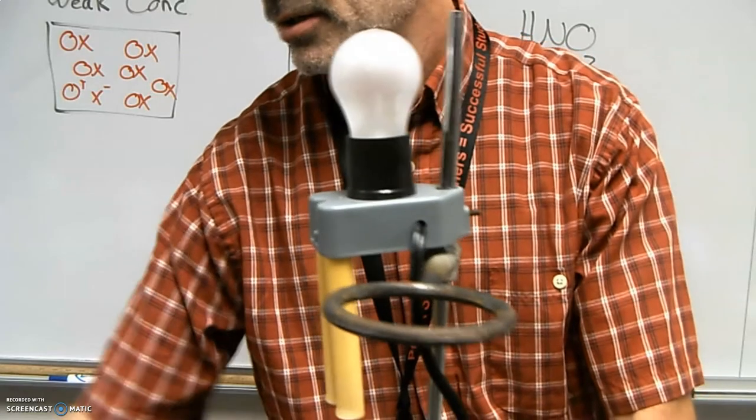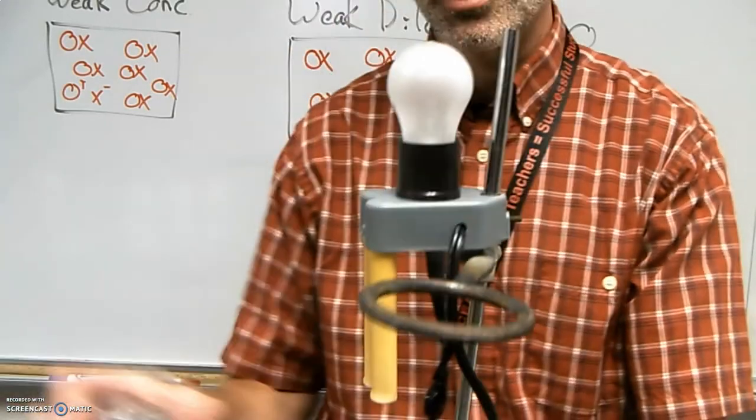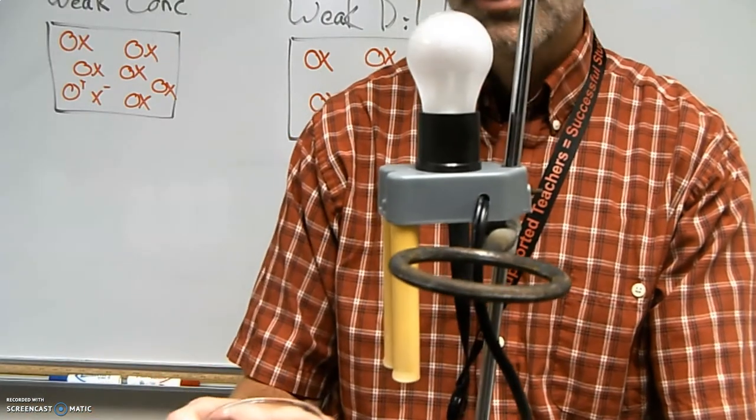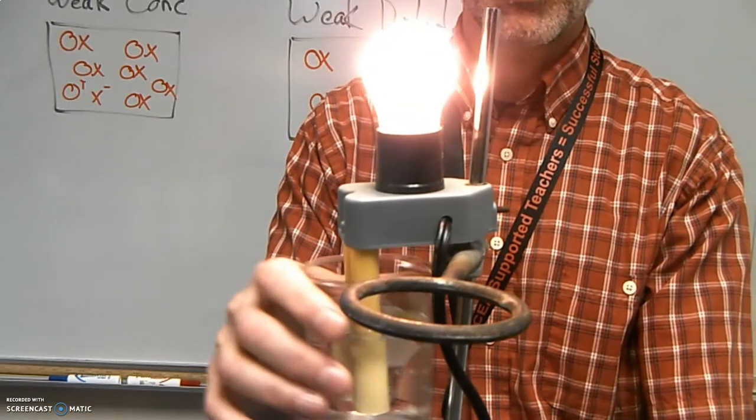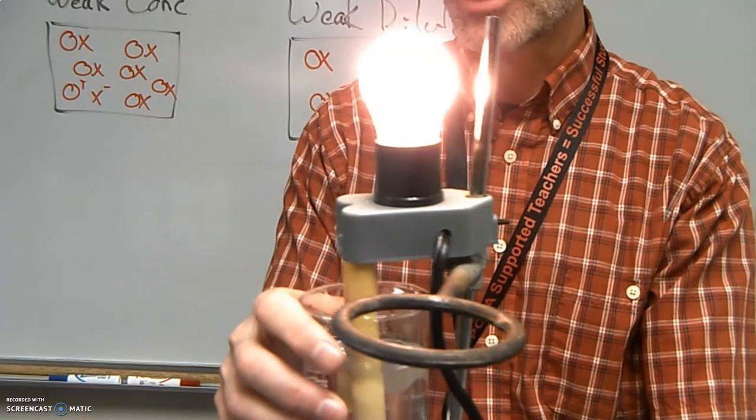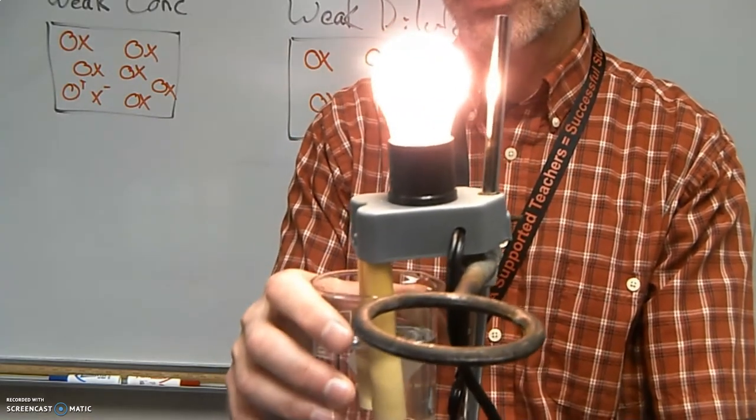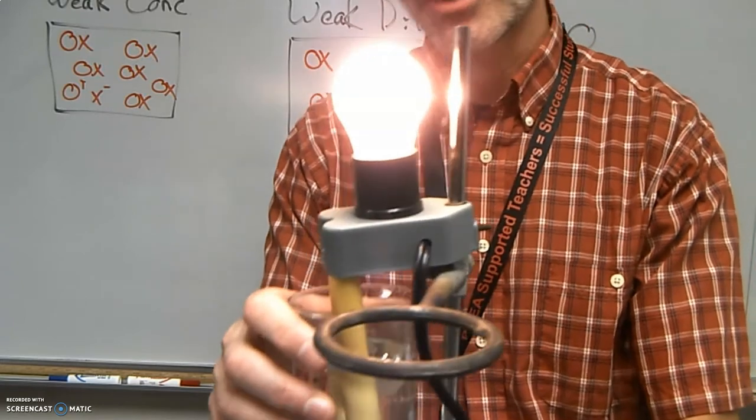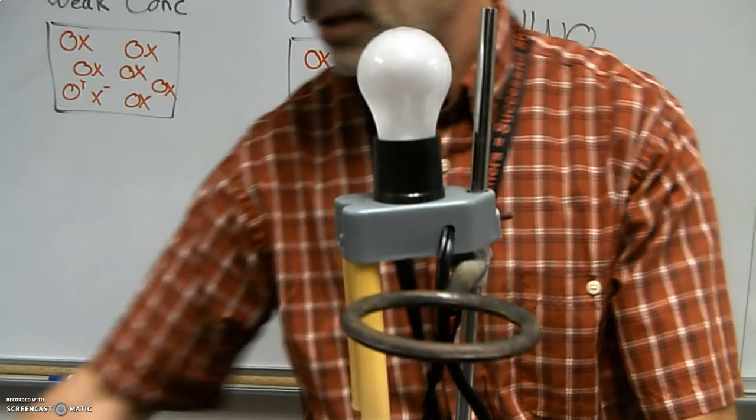The next one here, this is going to be the strong acid. This is a strong but dilute acidic solution, HCl. And yeah, that does light the bulb because it does dissociate completely. Strong acid but dilute. It separates, we have ions in here, we have hydrogen ions and chloride ions, it conducts electricity. And I'm going to give it a rinse again.